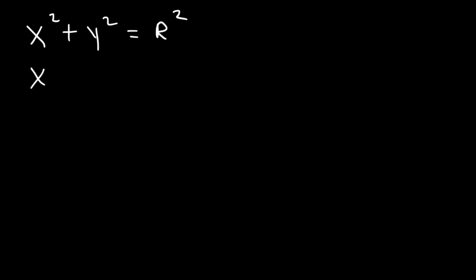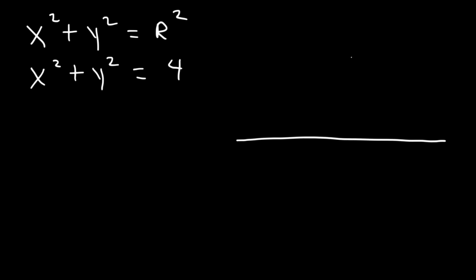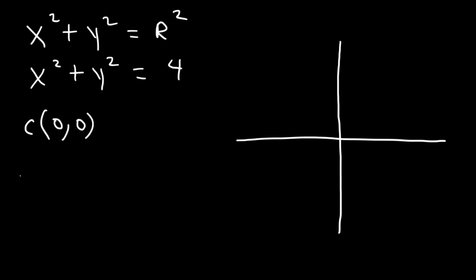So let's say if we have this equation: x squared plus y squared is equal to 4. What are the coordinates of the center, and what is the value of the radius? The center is just going to be the origin, (0, 0). And r squared is equal to 4, therefore the radius is the square root of 4, which is 2.